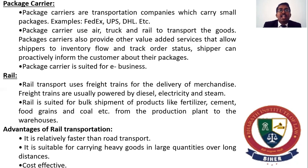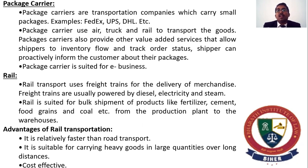Rail transportation uses freight trains for the delivery of goods. Freight trains are usually powered by diesel, electricity, and steam engines. Rail is suited for bulk shipments of products like fertilizers, cement, food grains, and coal — from production plant to warehouse. Advantages of rail transportation: it is relatively faster than road transportation and suitable for carrying heavy goods in large quantities over long distances cost-effectively.